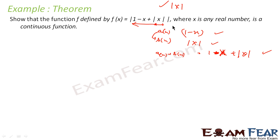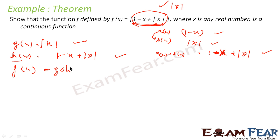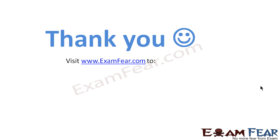But let me also show this using the f∘g concept. If we let g(x) = |x| and h(x) = 1 − x + |x|, then f(x) is nothing but g∘h — you take h first, that is 1 − x + |x|, then apply one more modulus g. h(x) is a continuous function since it is a(x) + b(x) where both are continuous. g(x) = |x| is also continuous. So g∘h is continuous, and since g∘h = f(x), f(x) is also a continuous function.